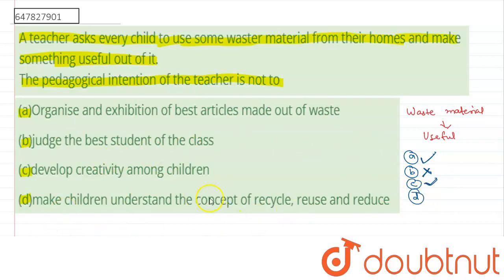Option D says: make children understand the concept of recycle, reuse and reduce. This is also correct because children learn this important concept from this activity — they use waste material and convert it into something useful, which demonstrates recycling and reuse, and also reduces the amount of waste material. So option D is also an intention of the teacher.